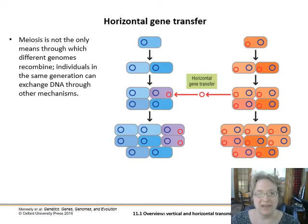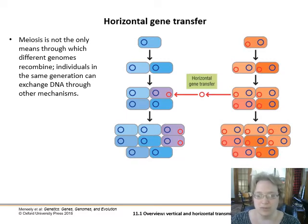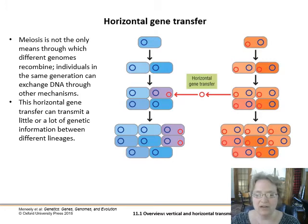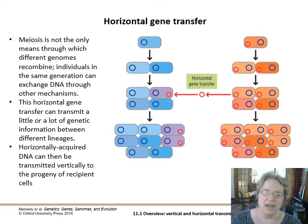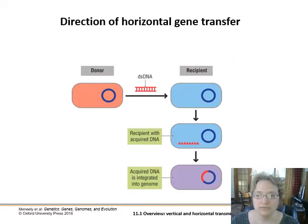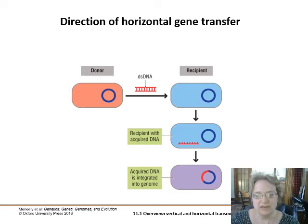The contrast to this is horizontal or lateral gene transfer, where individuals in the same generation can swap DNA through other mechanisms. We're going to talk about the three main mechanisms of horizontal gene transfer in this chapter. The interesting thing about horizontal gene transfer is it can be a very slight amount of DNA or quite a lot — it's very variable, depending on the particular method of gene transfer and the host and recipient cells. Once the horizontally transferred DNA is inserted into the genome or exists as a plasmid, it can then be transmitted vertically to the progeny of those cells.